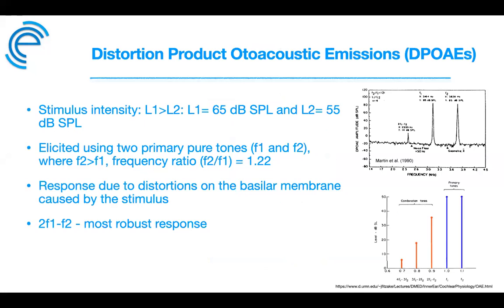For distortion product OAEs, they are elicited using two primary pure tones, F1 and F2, that are close in frequency. In response, the cochlea generates additional tonal signals at frequencies arithmetically associated to those tones, because the normal auditory system is nonlinear. The DPOAE response will have distortions at 2F1−F2, 3F1−2F2, and so forth. Clinically, the most commonly measured DPOAE is the 2F1−F2, using an F2/F1 ratio of 1.22, found by Harris in 1989 to be generally accepted for clinical use.